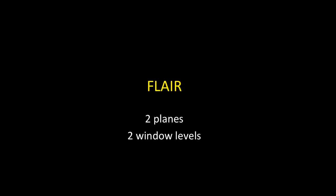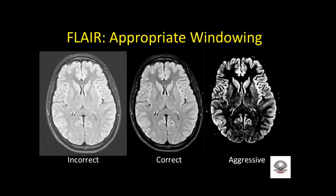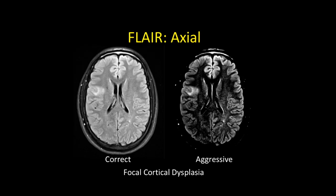Moving to FLAIR — axial and coronal at two window setting levels. Sometimes the tech sends over FLAIR at an inappropriate windowing level. You want to window it so the signal in air outside the brain is black and dark — that's the correct setting. Look at axial and coronal at that level. Then window it aggressively, suppressing white matter so only the cortex shows — a look similar to double inversion recovery without the acquisition time. Look at axial and coronal again at this aggressive setting, and cortical lesions should pop out.